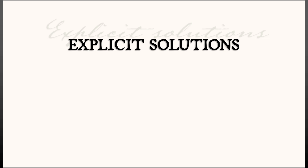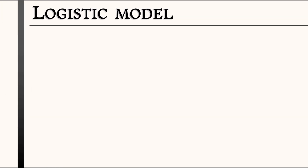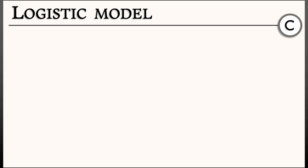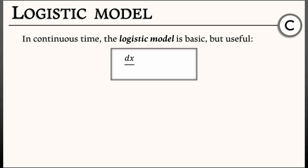When it comes to non-linear systems, having explicit solutions is somewhat of a rarity. It doesn't happen all that often, but it does sometimes work. Let's take a look at a continuous-time example of a very famous population model, something called the logistic model. This is simple, but it is useful for our purposes.